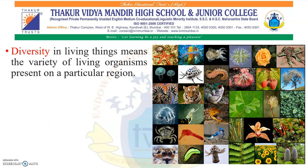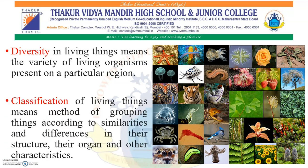Diversity in living things means the variety of living organisms present in a particular region. In the living world, a lot of diversity is seen both in animals and plants — every plant and animal is unique. Classification of living things means the method of grouping things according to similarities and differences in their structure, their organs, and other characteristics. So in this chapter, we are going to learn diversity in living things as well as their classification.